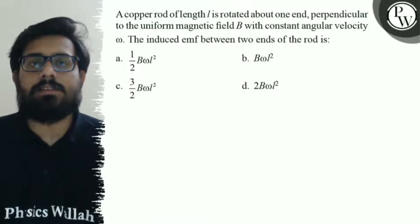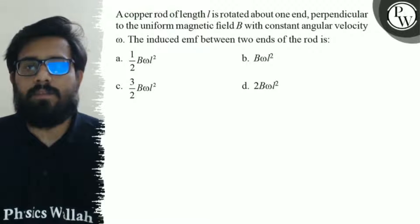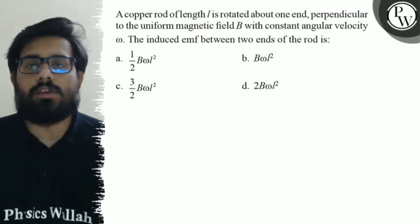A copper rod of length L is rotated about one end, perpendicular to the uniform magnetic field B, with a constant angular velocity omega. The induced EMF between the two ends of the rod is: